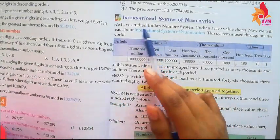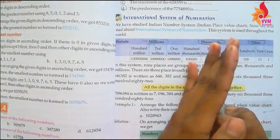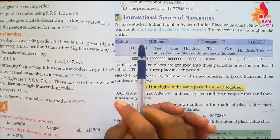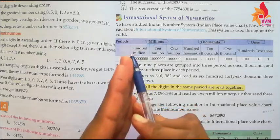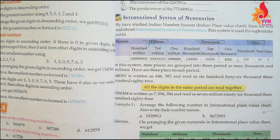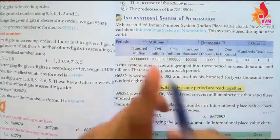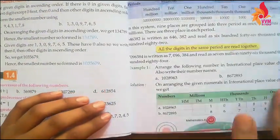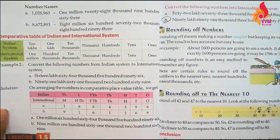Then comes the International System of Numeration. In this system: ones, tens, hundreds form the ones period; then thousands, ten thousands, hundred thousands form the thousands period; then millions, ten millions, hundred millions form the millions period; and then billions. Number names and place values can be written according to this system as well.